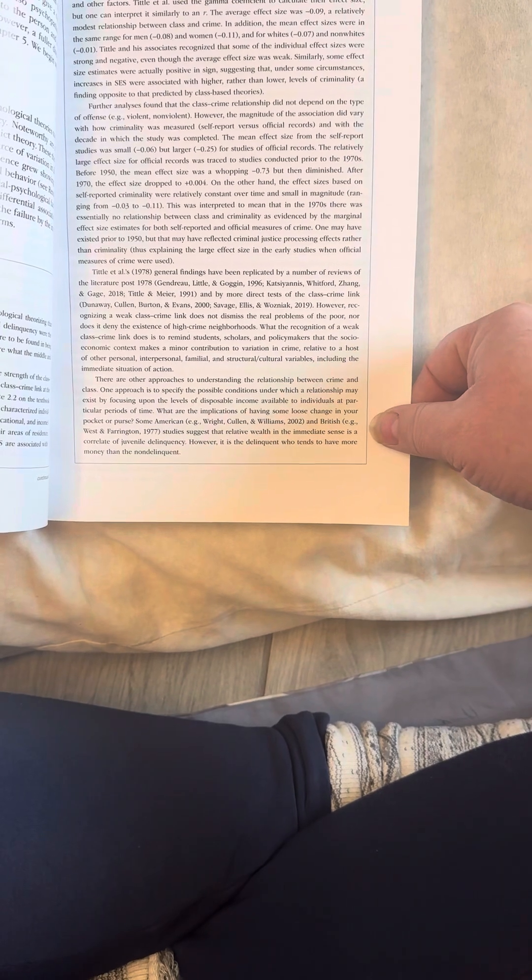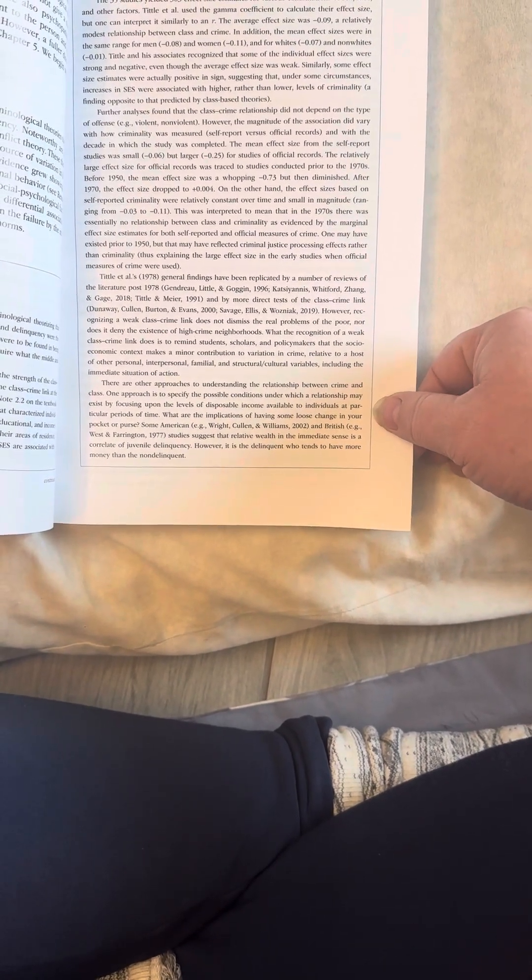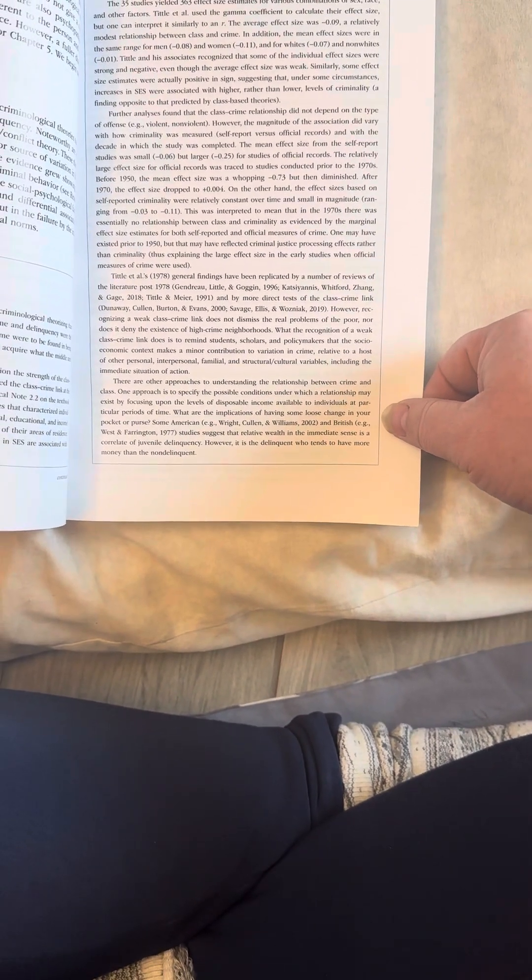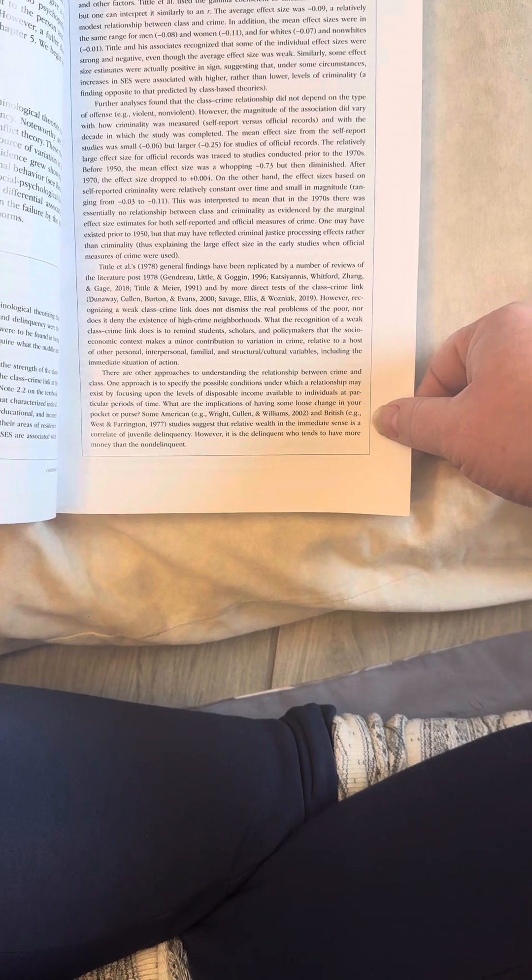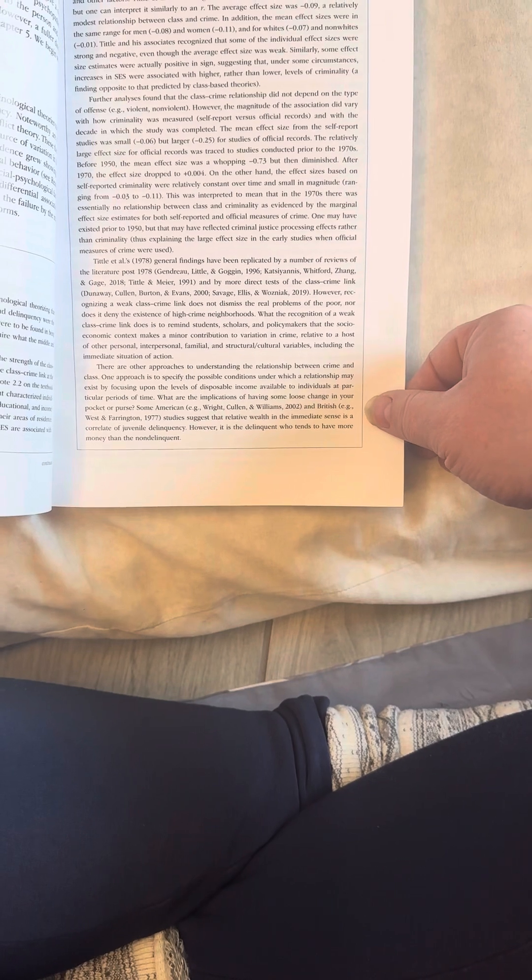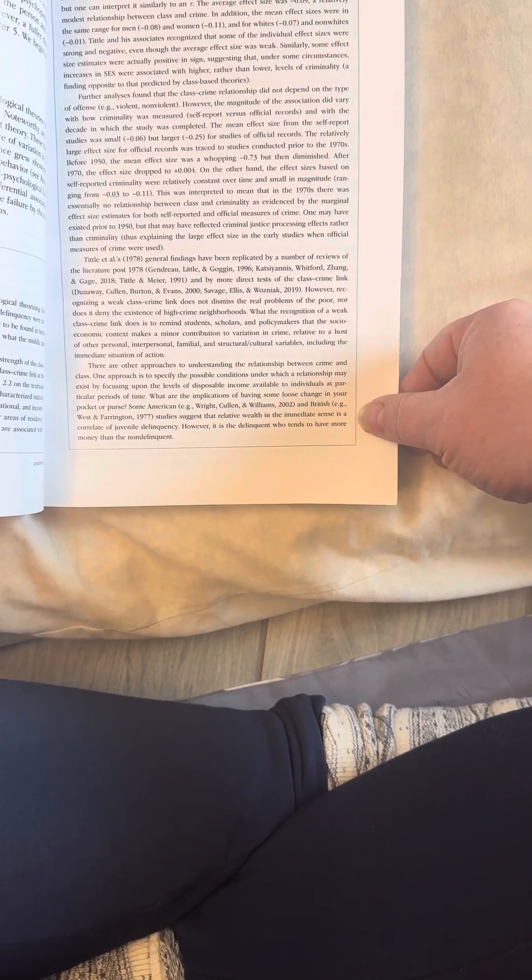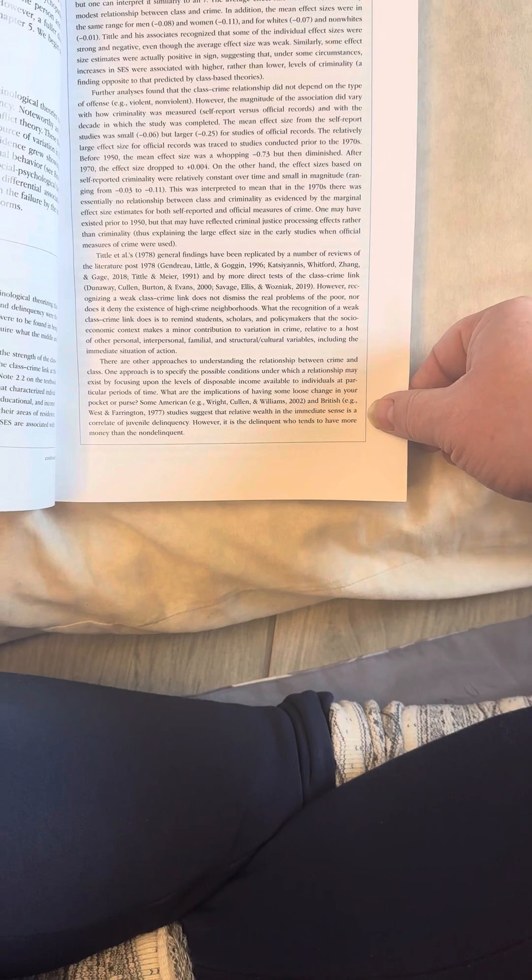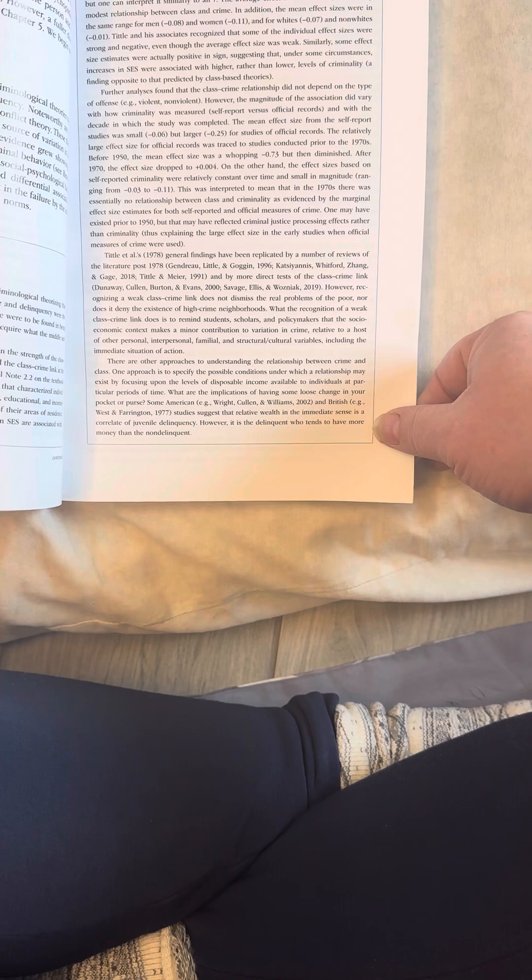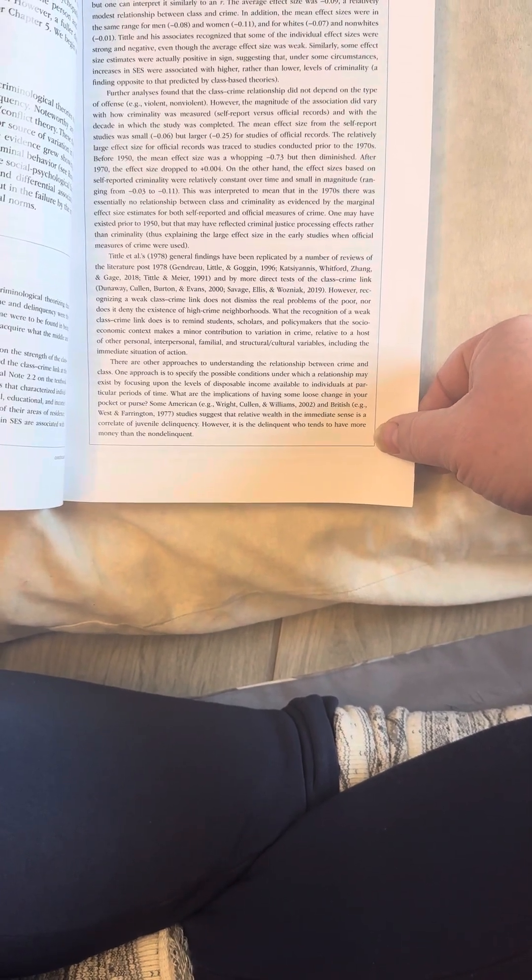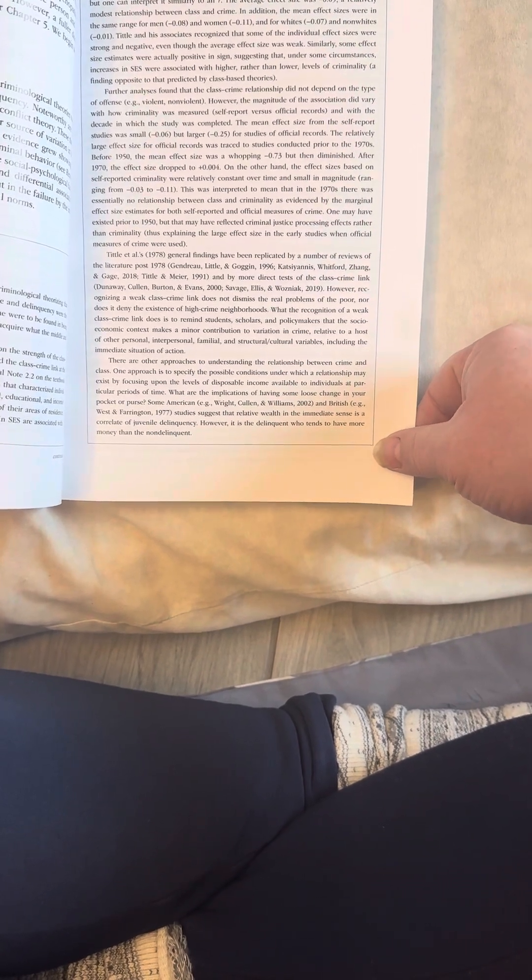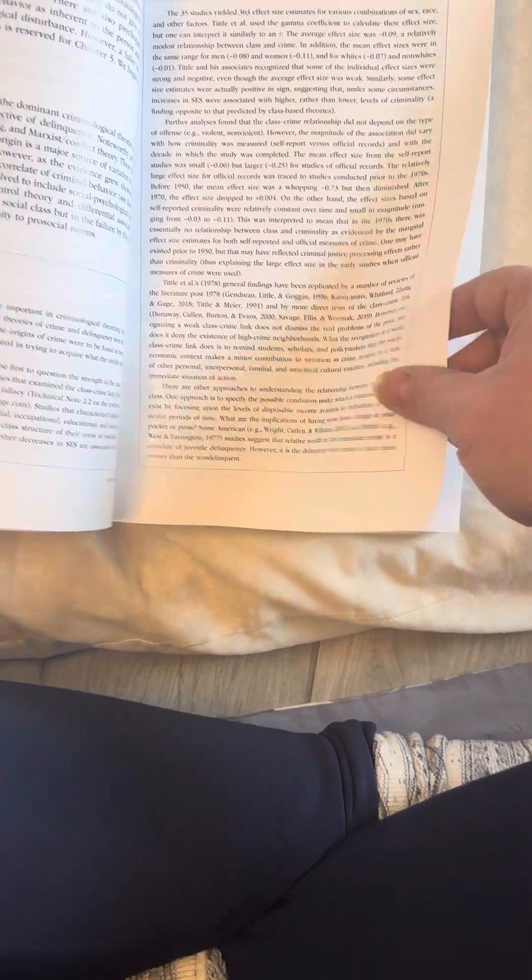There are other approaches to understanding the relationship between crime and class. One approach is to specify the possible conditions under which a relationship may exist by focusing upon the levels of disposable income available to individuals at particular periods of time. What are the implications of having some loose change in your pocket or purse? Some American studies suggest that relative wealth in the immediate sense is a correlate of juvenile delinquency. However, it is the delinquent who tends to have more money than the non-delinquent.